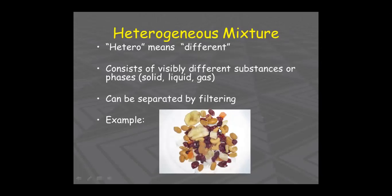An example of a heterogeneous mixture is a mixture of dry fruits. There is no fixed ratio, and we can use physical methods like hand-picking to separate the constituents of a heterogeneous mixture.